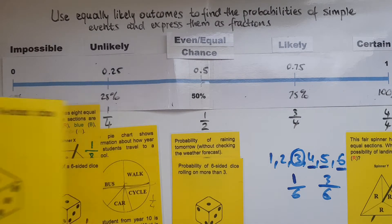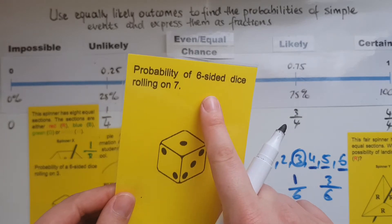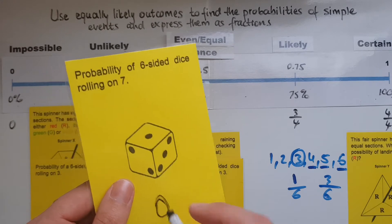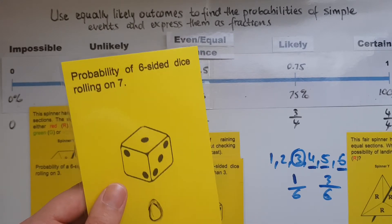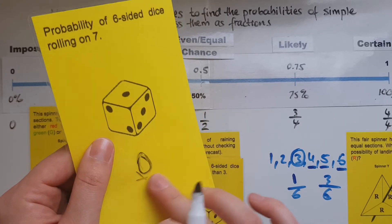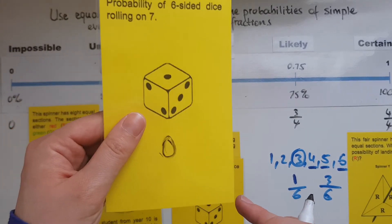And finally, the probability of a six-sided die rolling on seven. We'll write it as just zero because we don't write fractions with zero. So zero over seven is not a possibility, just write zero.